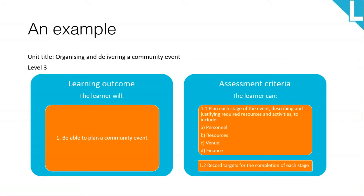For example, the level three qualification in event management includes the unit 'Organising and Delivering a Community Event'. Learning outcome one for this unit is 'be able to plan a community event', and the assessment criteria is: 1.1 — Plan each stage of the event, describing and justifying required resources and activities, to include A, B, C and D. 1.2 — Record targets for the completion of each stage.